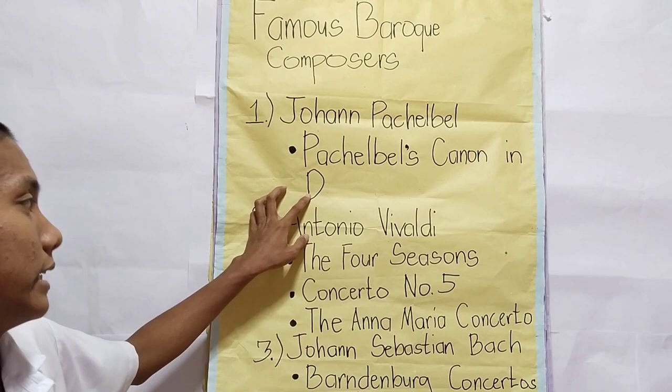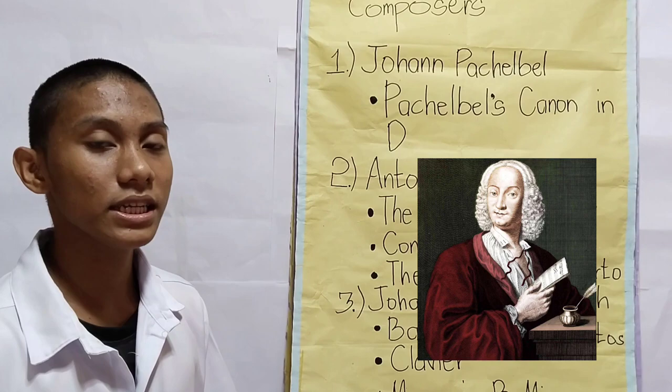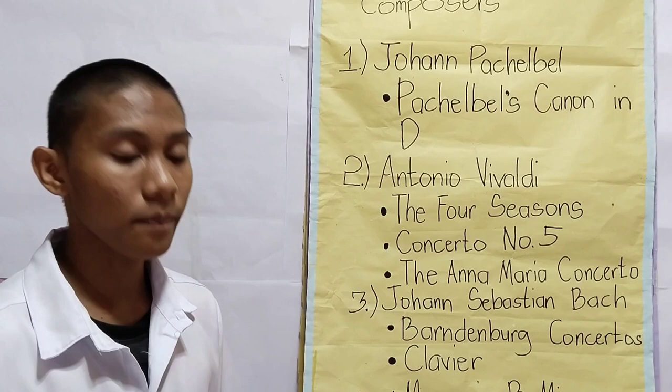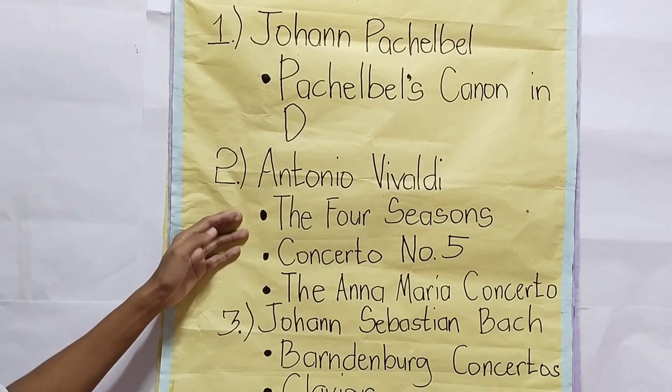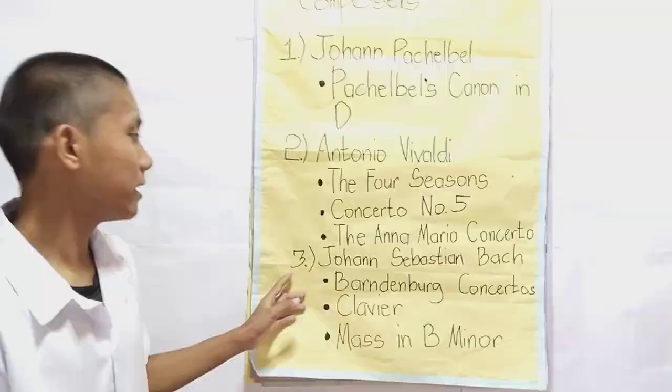Number two, Antonio Vivaldi. Antonio Vivaldi was a Venetian composer, virtuoso violinist, and impresario of the Baroque era, regarded as one of the greatest composers of the period. Some of his compositions include The Four Seasons, Concerto No. 5, and the Ana Maria Concerto.